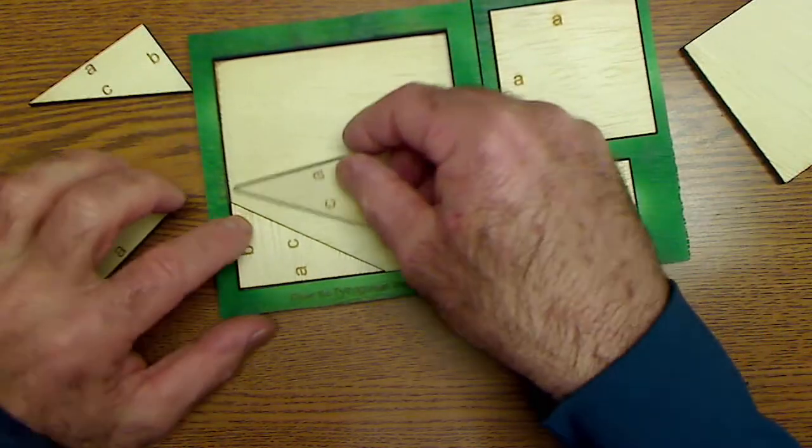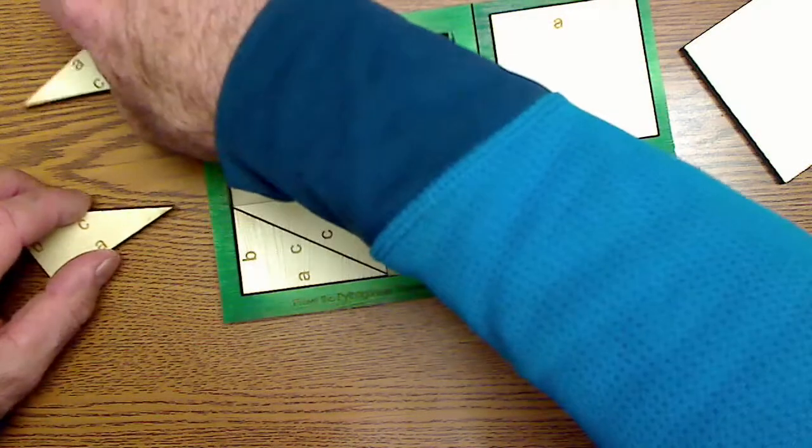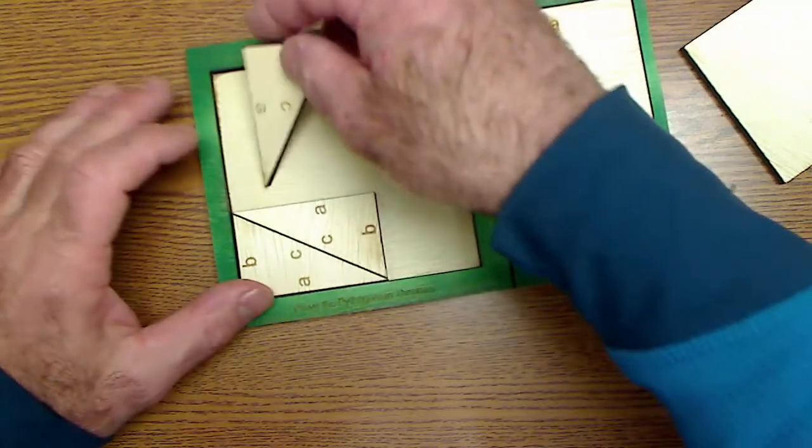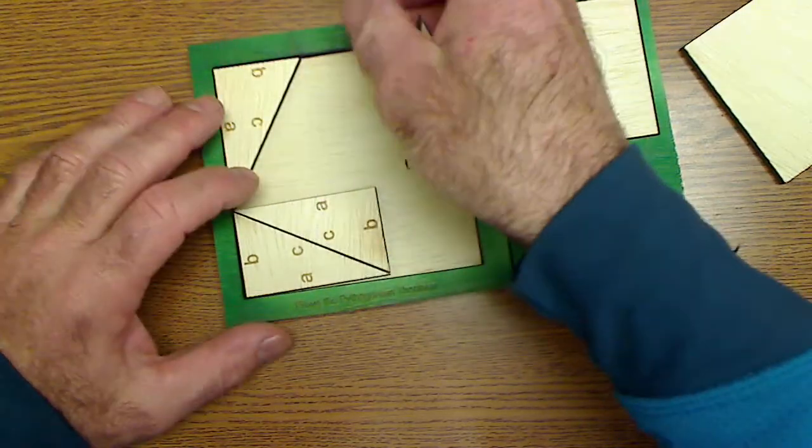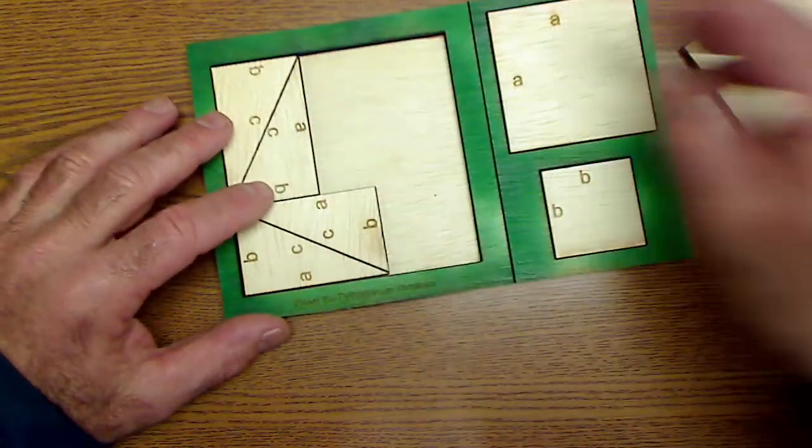I can see that if I take these right triangles and put them together, that the sum of all four triangles takes up that much space.